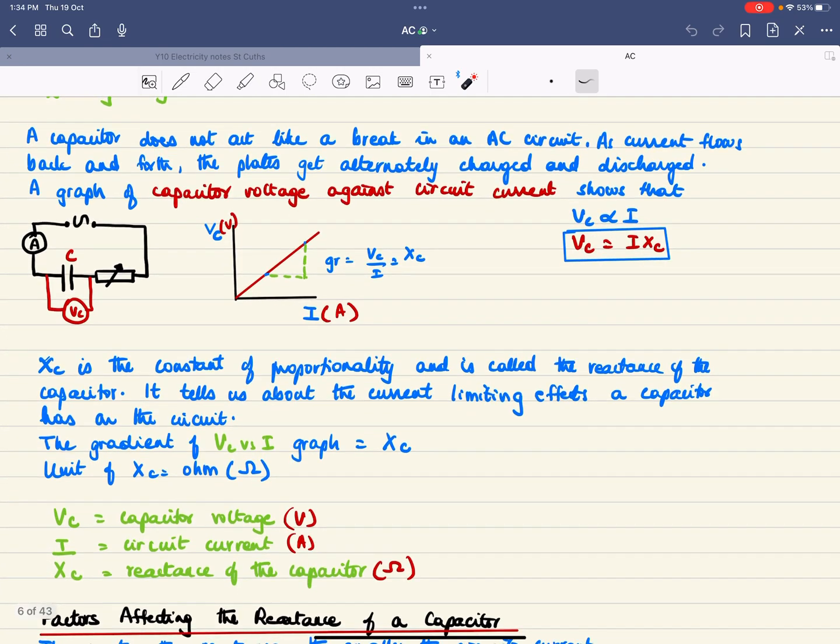The reactance of the capacitor is about the current limiting effects a capacitor has in the AC circuit. The gradient is your Xc and the unit is Ohms.